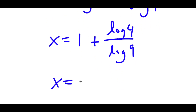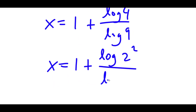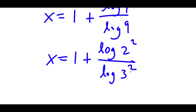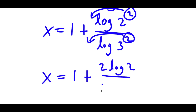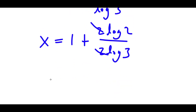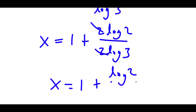And log 4 — that's the same thing as 2 squared. So I get 1 plus log 2 squared over log 9. And 9 is 3 squared, so log of 3 squared. Remember, if I have something in the form log a to the power of b, I can move b to the front. So now I have x is equal to 1 plus 2 log 2 over 2 log 3. These two 2's cancel out, so I get x is equal to 1 plus log 2 over log 3.